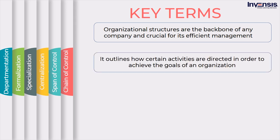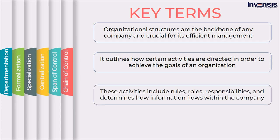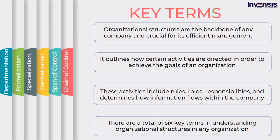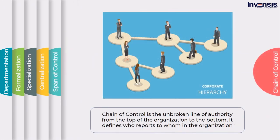It outlines how certain activities are directed in order to achieve the goals of an organization. These activities include rules, roles, responsibilities, and determines how information flows within the company. There are a total of six key terms in understanding organizational structures in any organization. Chain of control is the unbroken line of authority from the top of the organization to the bottom. It defines who reports to whom in the organization. Depending on the size of your organization, your chain of command can vary in length. But regardless of how long it is, all chains of command clarify who reports to whom within your organization.